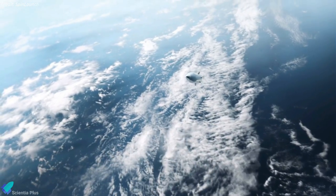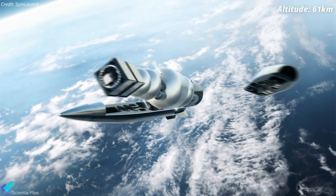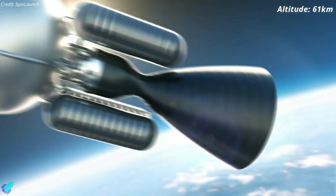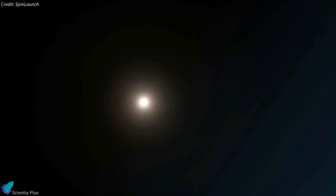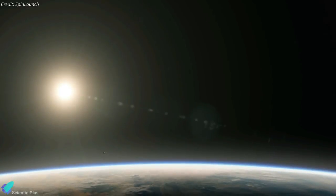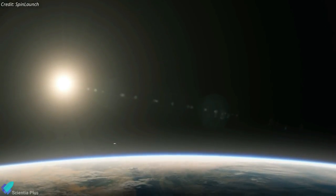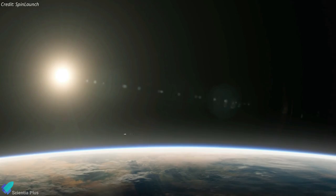After coasting for about a minute, the rocket will ignite its engines at approximately 61 kilometers in altitude. At that point, little atmospheric pressure will be left to challenge the rocket's ascent, so the rocket should only require about a minute's worth of fuel to reach orbital speeds of about 28,000 kilometers per hour.